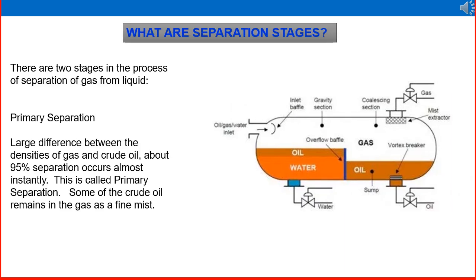There are two stages in the process of separation of gas from liquid. The first and most important is primary separation: due to the large difference in densities between gas and crude oil, about 90 percent of separation occurs almost instantly. This is called primary separation. Some crude oil remains in the gas as a fine mist.